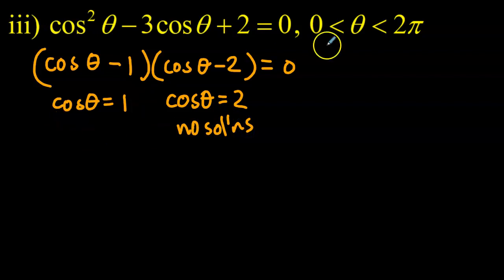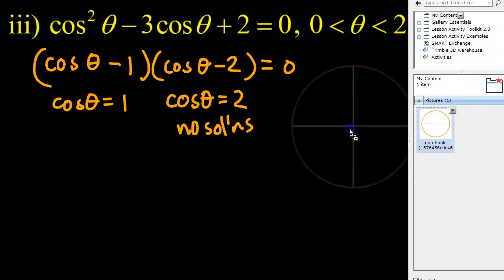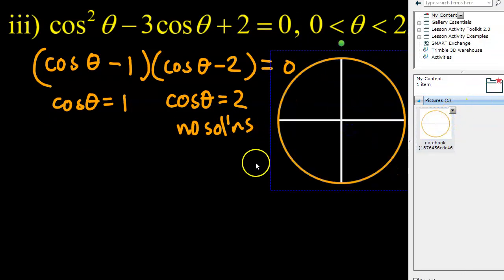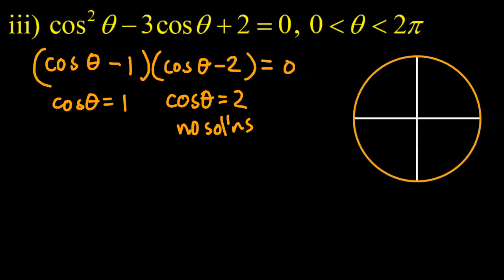This one, well, of course, let's grab our trusty unit circle here. There it is. And we'll just go here. Cosθ = 1. We've done this before. Right about there, right?